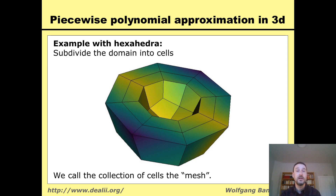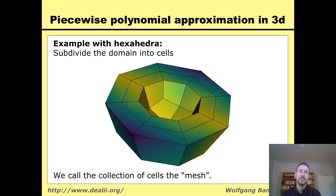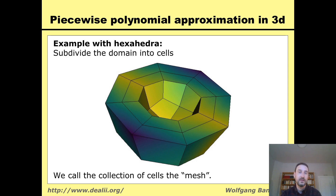I can use one or the other — it doesn't matter very much. Sometimes we can also have meshes that consist of combinations of some tetrahedra and some hexahedra. If you want to mix them, then typically you also need other shapes like pyramids and wedges. The point is that I define my mesh as a domain subdivided into cells, and on each cell I define my function as piecewise linear or piecewise polynomial.